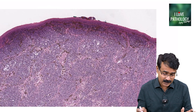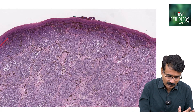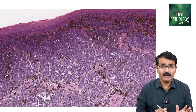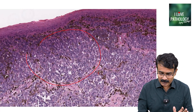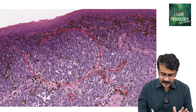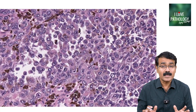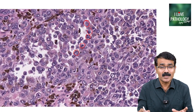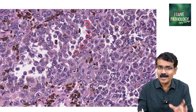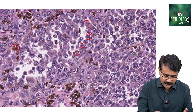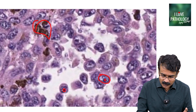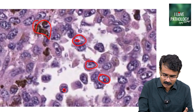Look at this malignant melanoma slide — you can make out that's the epidermis and the whole thing is the tumour. At higher magnification, they are sheets of cells. In between, you can find pigment, and some of these cells also have pigment. You can make out the pleomorphism — marked variation in size and shape of the nucleus. That's the feature of malignancy. And you can also find prominent nucleoli inside the nucleus.